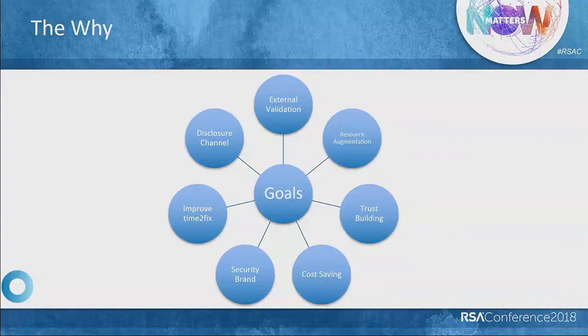So why do you need goals? For your efforts and investments in a bug bounty program to provide the desired results or value, it is crucial that you start by first identifying what you want to achieve from the program. You might be looking for external validation of your internal security efforts, resource augmentation for a smaller internal team, cost savings, or simply a disclosure channel to communicate with the researcher community. Regardless of the type or number of goals, it is important to formalize them at the very beginning because they provide focus and direction and help you track the success and failure of your program.